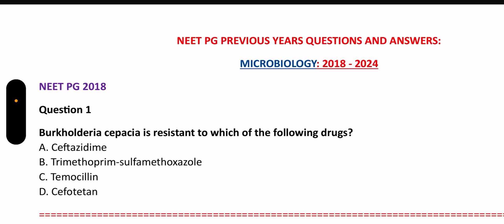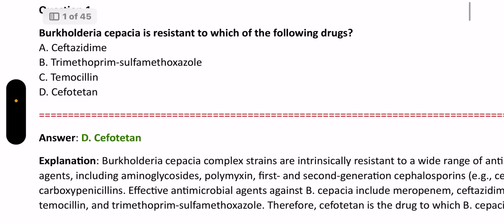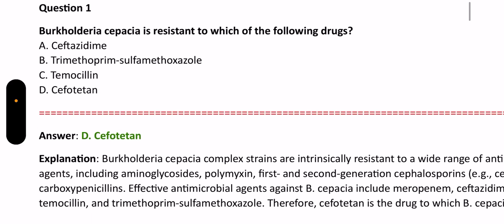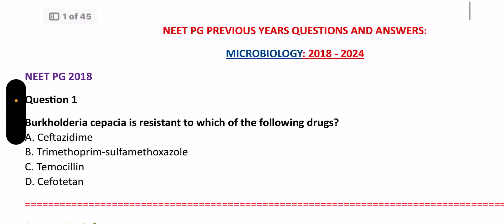First question of NeerPG 2018: Burkholderia cepacia is resistant to which of the following drugs? The answer is Cephotetan because Burkholderia cepacia complex strains are intrinsically resistant to a wide range of antibiotic agents including Aminoglycosides, Polymyxin, 1st and 2nd generation cephalosporins, and Carboxypenicillins.